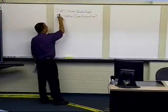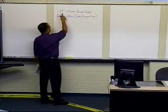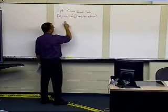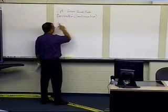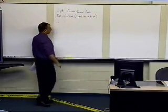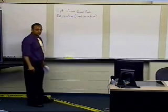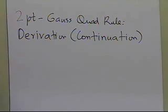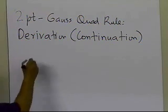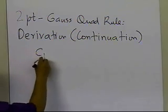In this segment, we're going to calculate the two-point Gauss quadrature rule. We're going to do the derivation — specifically, we're going to continue the derivation from the previous segment. So let's go ahead and see what we had in the previous segment.